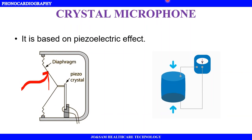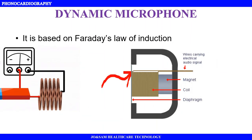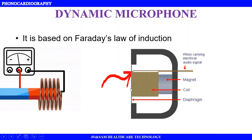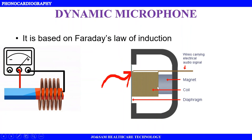The dynamic microphone works on Faraday's law of induction. A coil moves inside a magnet. In this construction, sound waves vibrate a diaphragm — a sheet of semi-flexible material. This causes stress on the coil, making it move inside the magnet. This movement produces an electrical output. So the dynamic microphone converts sound waves to electrical output via electromagnetic induction.